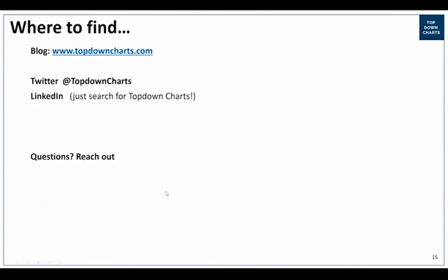I'll just leave it there - that's a disclaimer I probably should have shown at the start. Where to find us on the blog: topdowncharts.com, or just Google Top Down Charts - we're pretty active on Twitter and LinkedIn. In terms of what we offer, you can have a look on the website and check out a trial if you're interested. Basically, weekly research pieces and a monthly chart book. If we have any questions, now is the time.